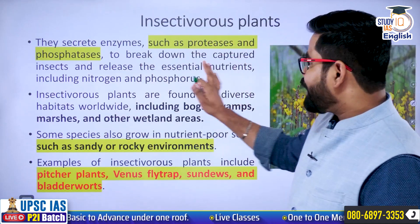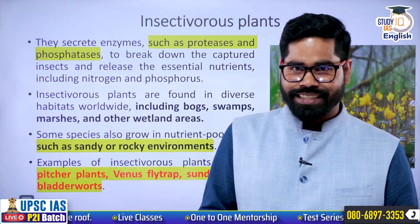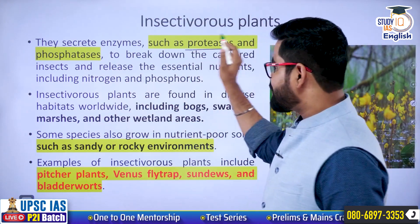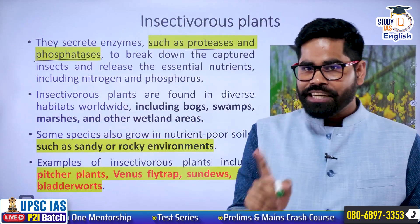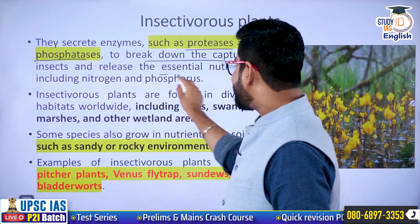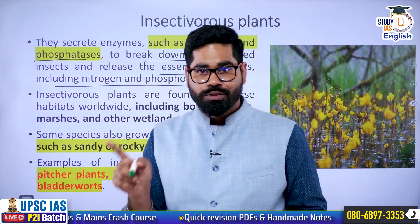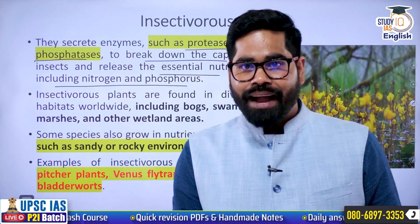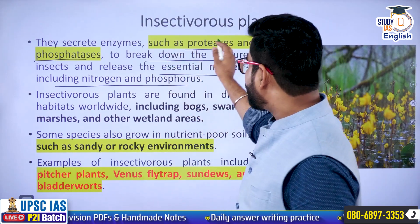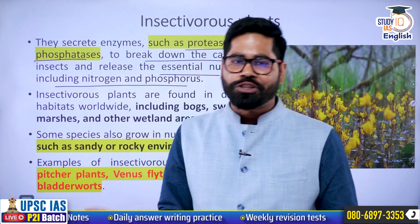How does their working mechanism work — how do they digest the insects? Basically, they secrete certain enzymes: proteases and phosphatase. They are secreting two enzymes which can break down the captured insects and release essential nutrients, including nitrogen and phosphorus. The soil is poor in these nutrients, so they capture insects and using proteases and phosphatase, they break down the insects and gain their nutrients from there.